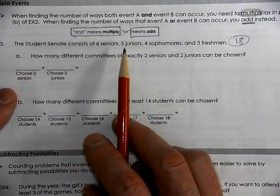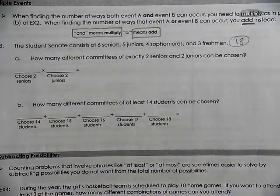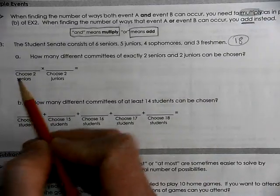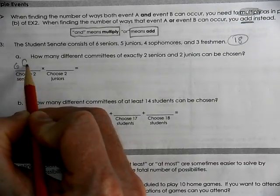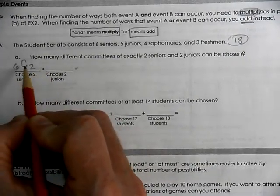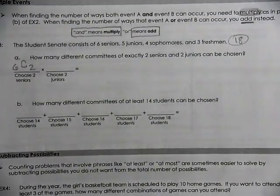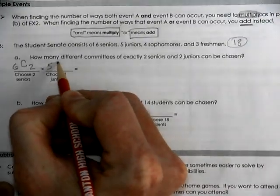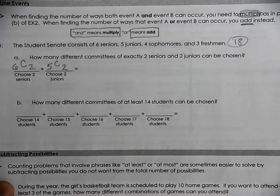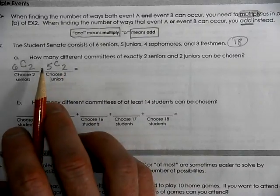We can't take all six seniors and all five juniors, so we narrow down the subcommittee. How many seniors do we choose from? Six seniors — and this is a combination question because order doesn't matter; it doesn't matter if you're picked first or second. Then we have five juniors to choose from, taking two: 5C2. We want both seniors AND juniors, so it's a multiplying situation.